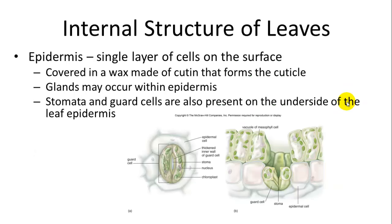Looking at the microstructure of leaves, there is an outer single layer of epidermal cells, usually covered in a wax made of cutin, which forms the cuticle. There may also be glands within the epidermis that secrete various substances, which may deter predators or be poisonous. The stomata are the pores, and guard cells are the cells surrounding the stomata that allow them to open and close.